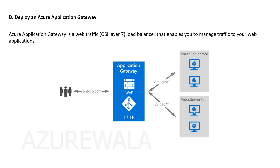Option D: Deploy an Azure Application Gateway. Azure Application Gateway is a web traffic load balancer which works on OSI Layer 7. The load balancer is used to distribute traffic to a backend pool, therefore it is not the correct answer.